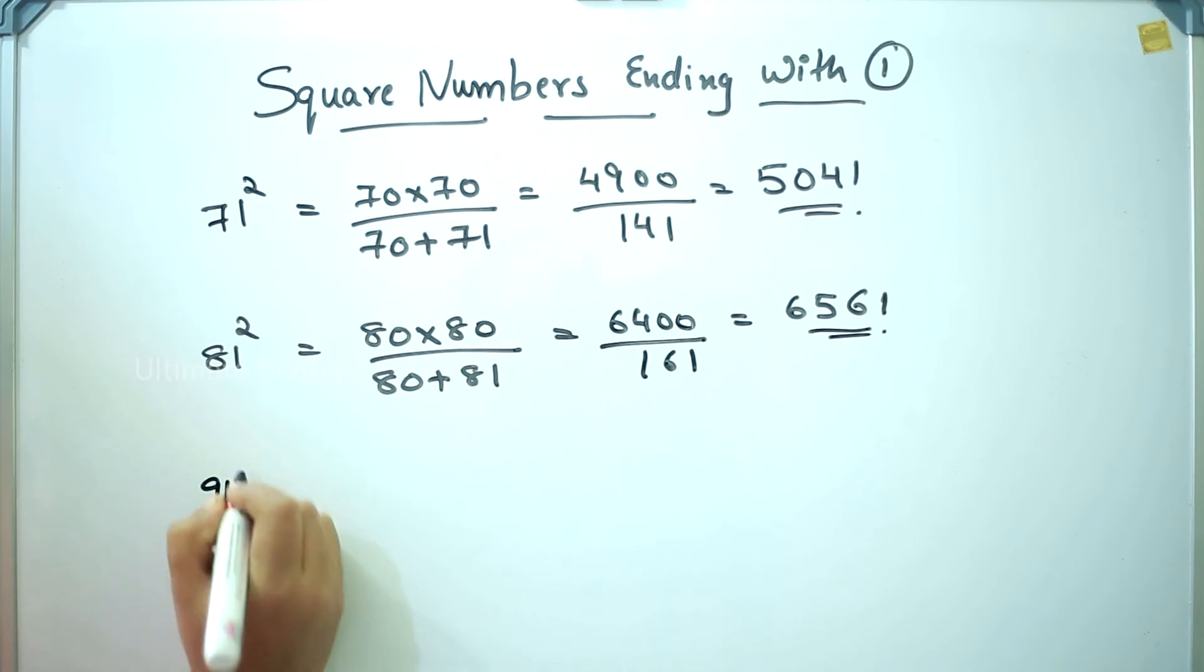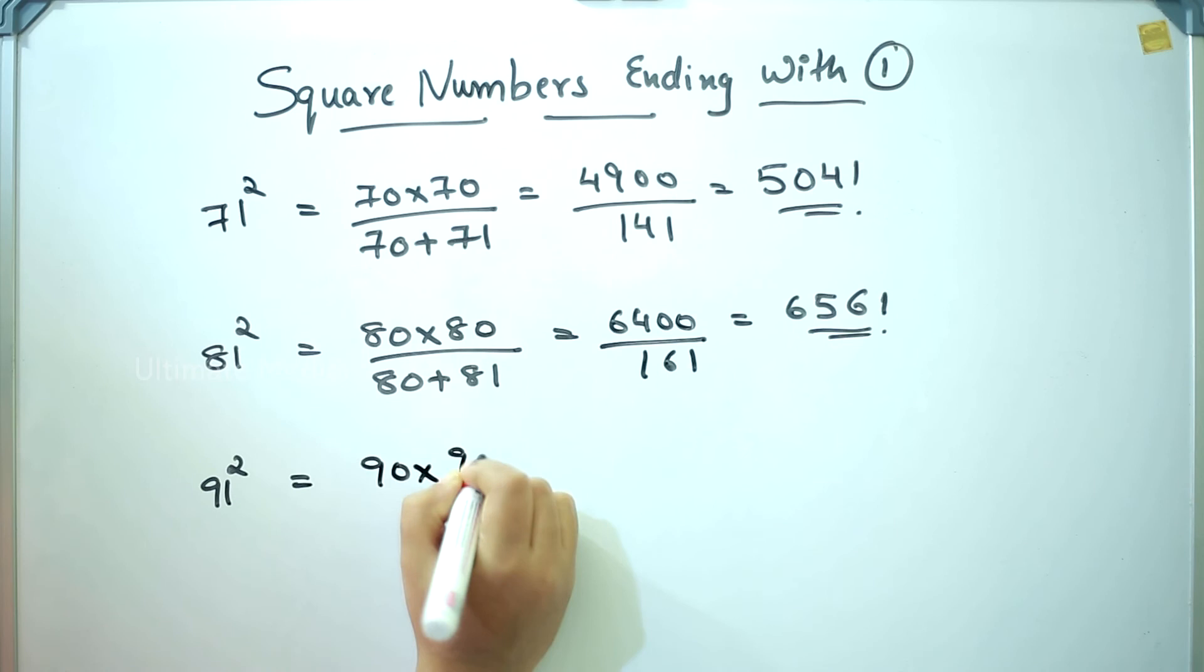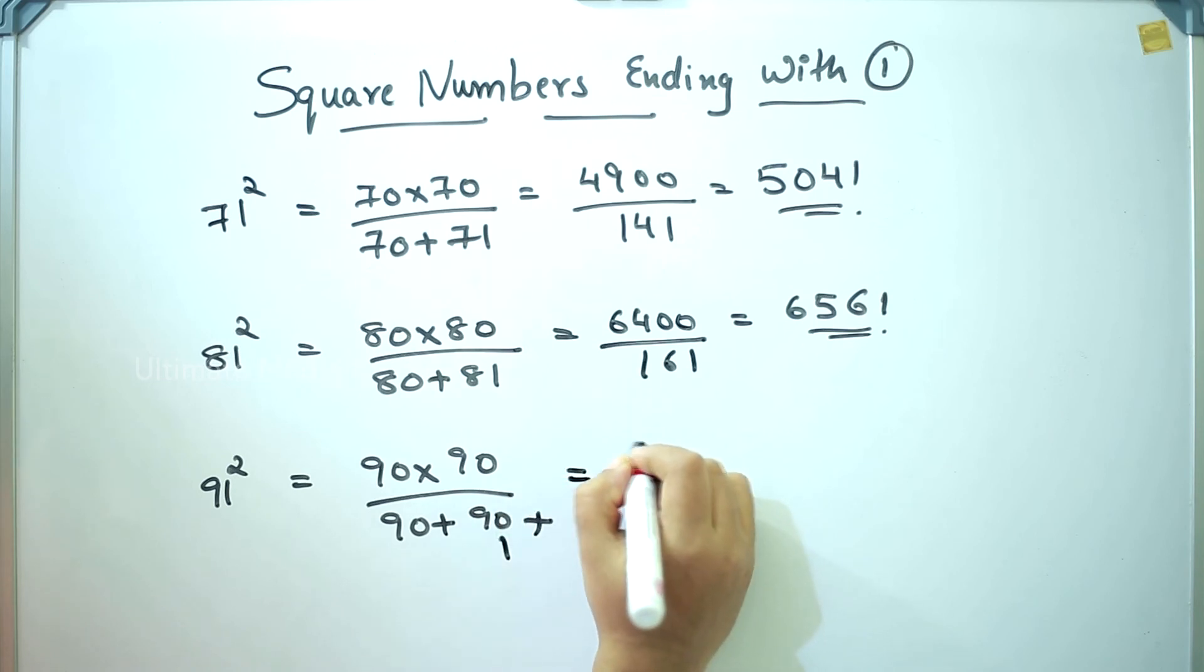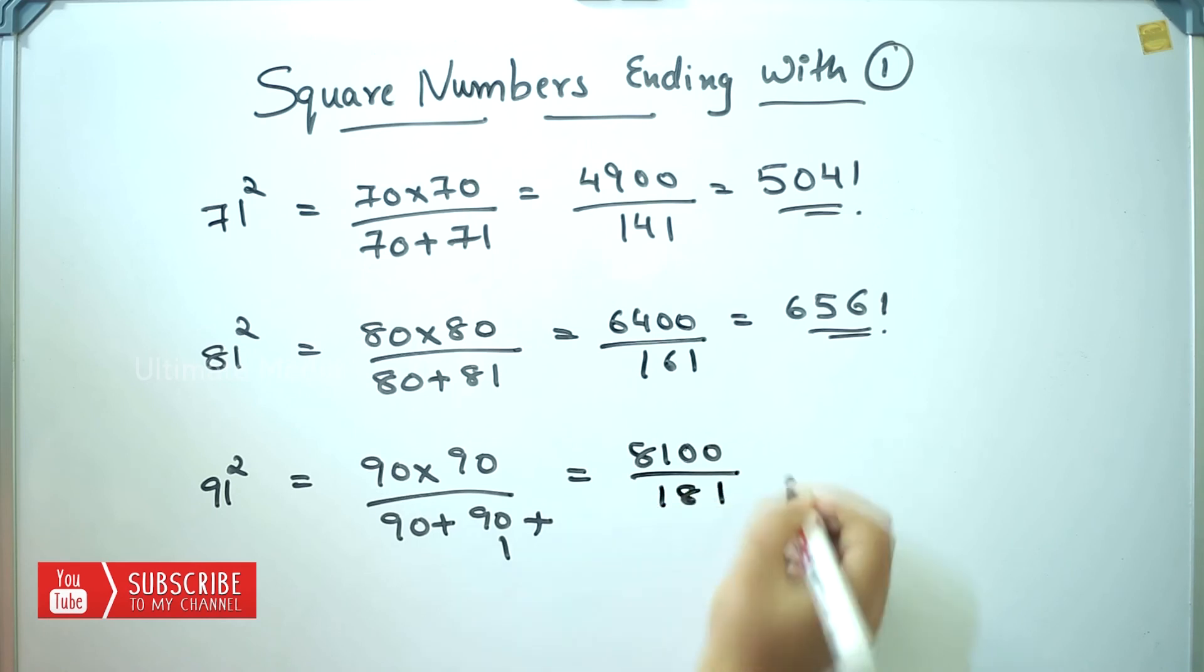In addition, 91 square: 90 into 90 divided by 90 plus 90 plus 1. That is 8100 divided by 181. Answer is 8281.